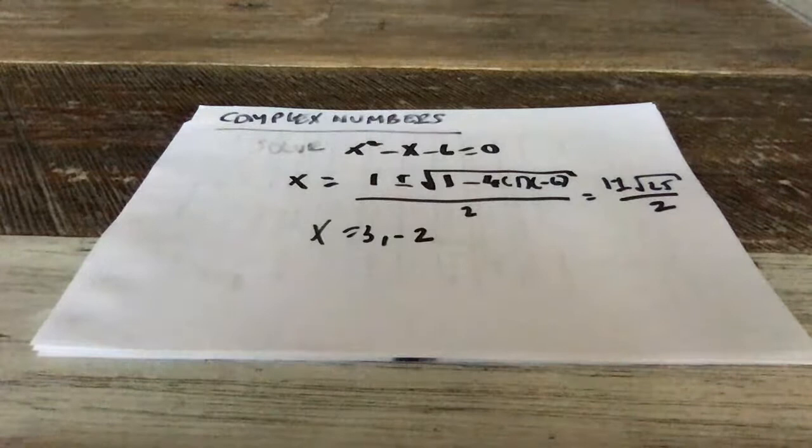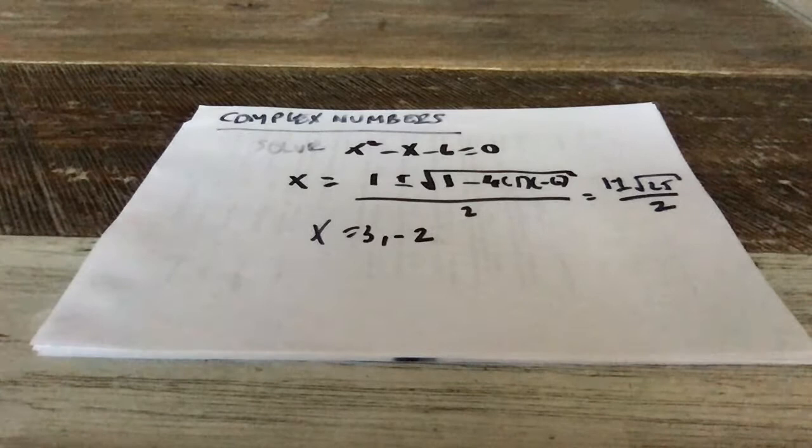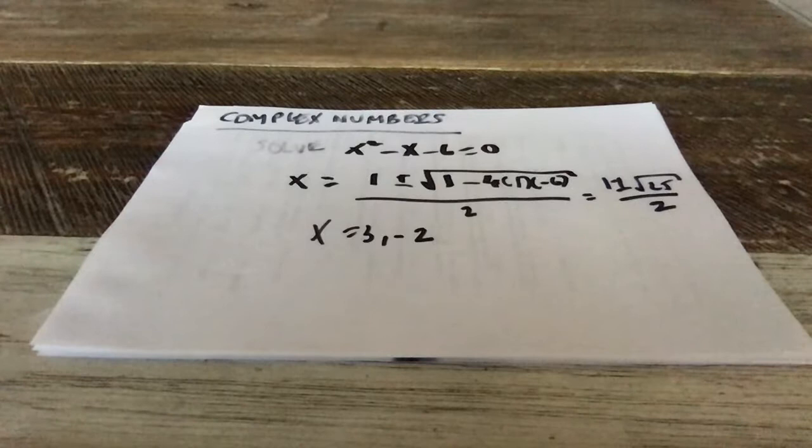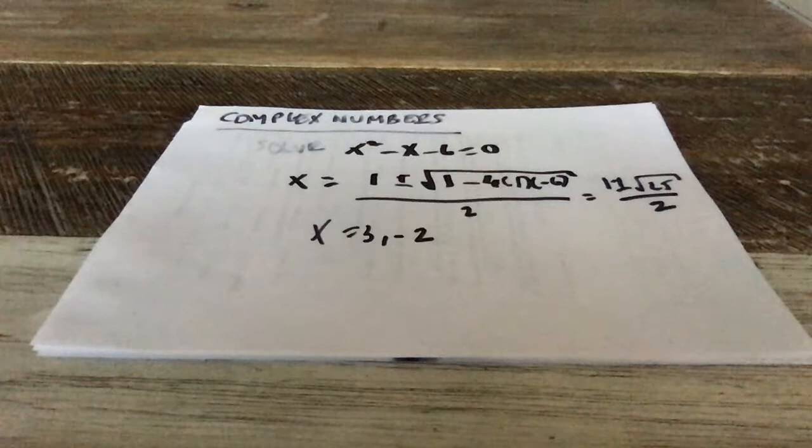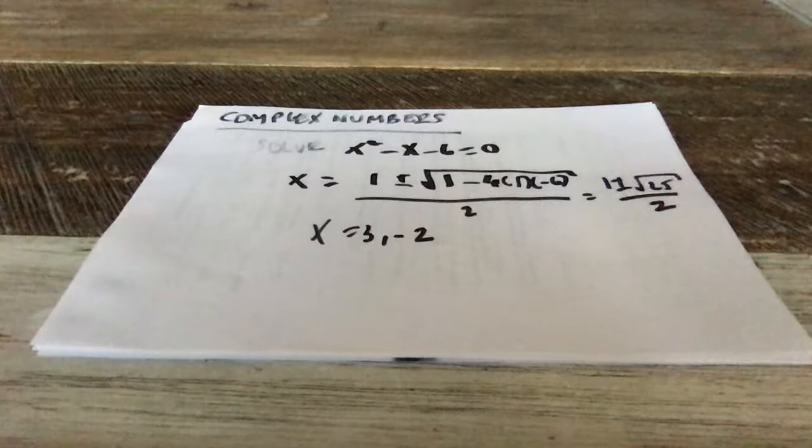And what does that mean? It means that if you substitute in 3 into the original equation, and an equation is just some expression involving a variable equal to 0. If I substitute 3 into this expression here, I'm going to get 0 equal to 0. That's what solving an equation means. It means that if I replace the variable by a number and I get 0 equal to 0, that number is said to be a solution. So when you plug in 3, you get 9 minus 9, which is 0. And if you plug in minus 2, you get 4 plus 2, which is 6 minus 6, which is equal to 0. So it all works.